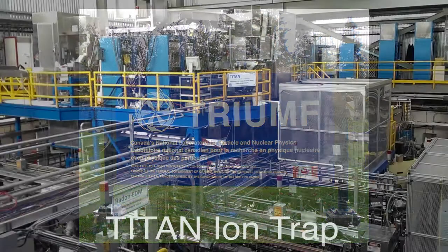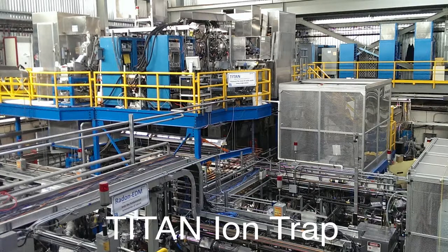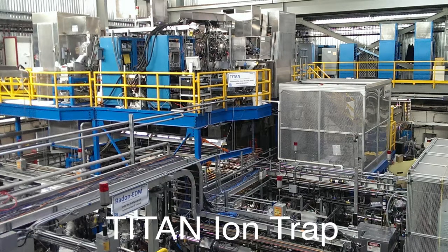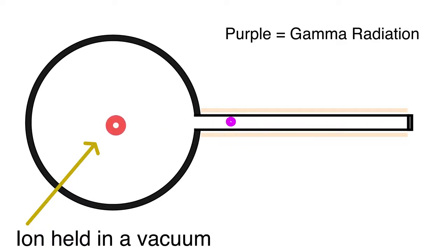Our project is primarily designed for Titan. Titan is an ion trap used by Triumph to conduct atomic and nuclear research. For certain experiments, ions are characterized by collecting the amount of gamma radiation they release.